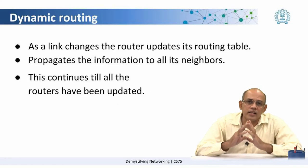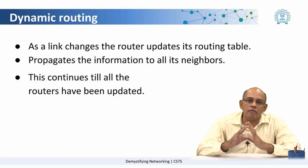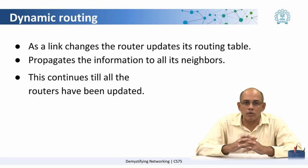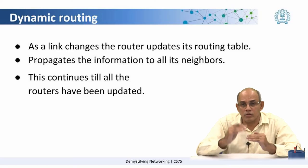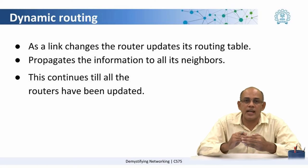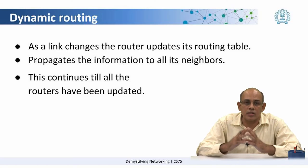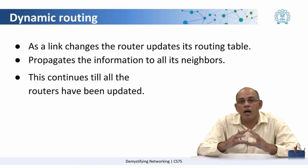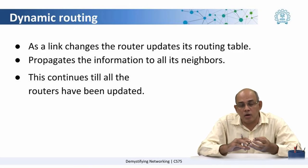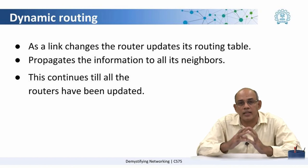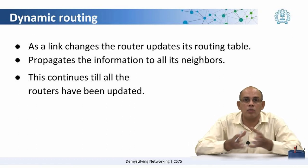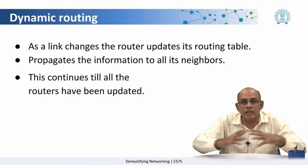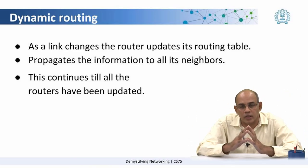Now, while a distance vector algorithm works well when routes are stable, what happens when a link goes down? As soon as the link goes down, the router which is attached to the link determines that the link has gone down. It changes its routing table, and as soon as the routing table is changed, it has to propagate that information to all the routers that it is connected with, and so on and so forth — that information has to spread through the network.